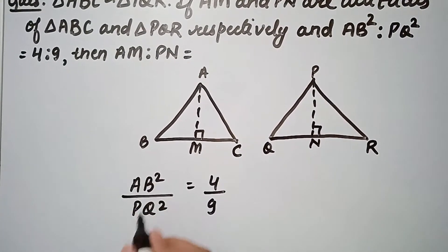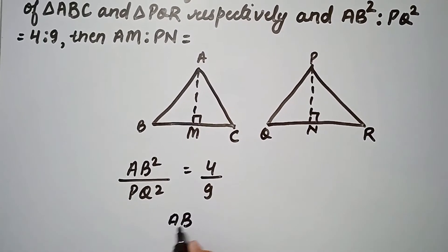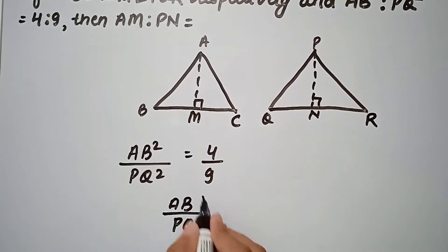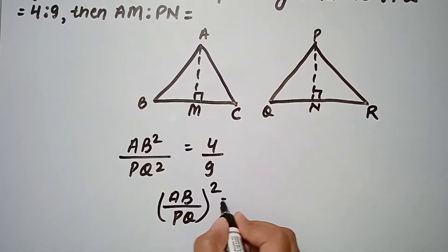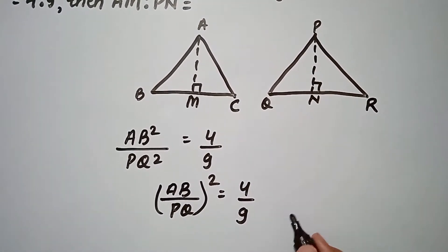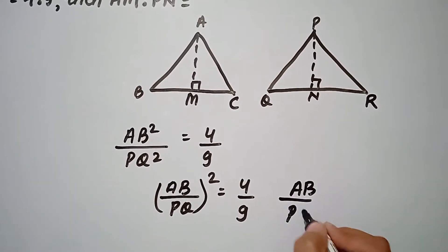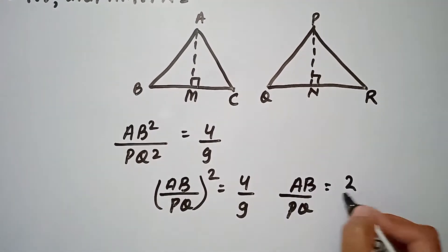AB square upon PQ square can be written as AB upon PQ whole square is equal to 4 upon 9. This square will go inside as under root, so AB upon PQ value will be 2 upon 3.